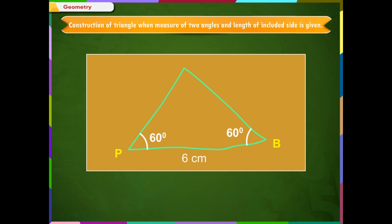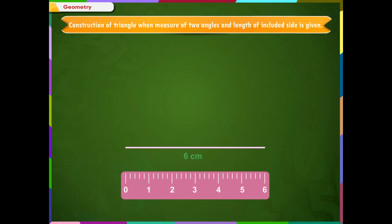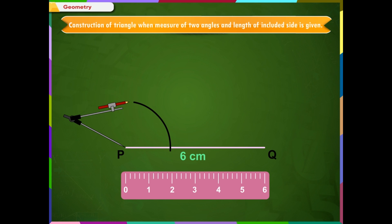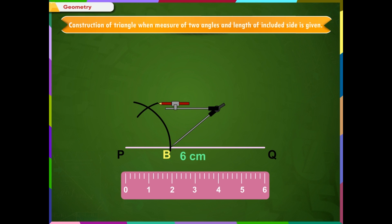Step 1: Draw a line segment PQ equal to 6 cm using a ruler. Step 2: We need to draw angle P as 60 degrees. With P as center and of any radius, draw an arc cutting PQ at B. With B as center and with same radius, draw another arc cutting the previous arc at A. Step 3: Join PA and produce it to get a line PR. Angle RPQ is equal to 60 degrees.